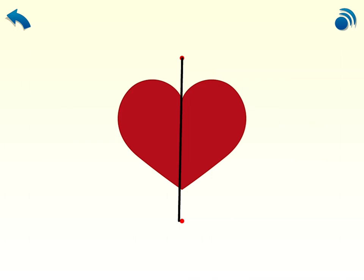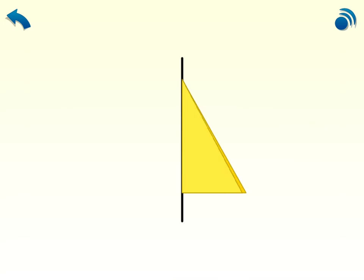This triangle is symmetrical. Join. Touch. The two halves match exactly. You drew the line of symmetry. Another symmetrical shape. See how the two halves match. You drew the line of symmetry. This is a t-shirt. Join. It's a match. You drew the line of symmetry.